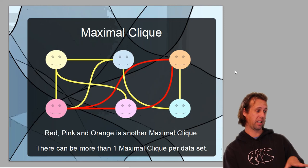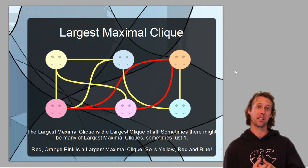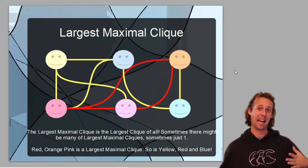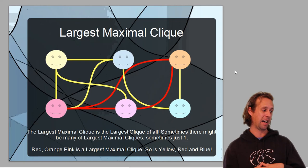Since there's nobody else in this particular graph that's friends with all of the three clique members so far, the largest clique of all in a graph is called the largest maximal clique. It's the largest clique in the entire graph. You can't add any more, and there's no other larger maximal cliques that have more people in them.